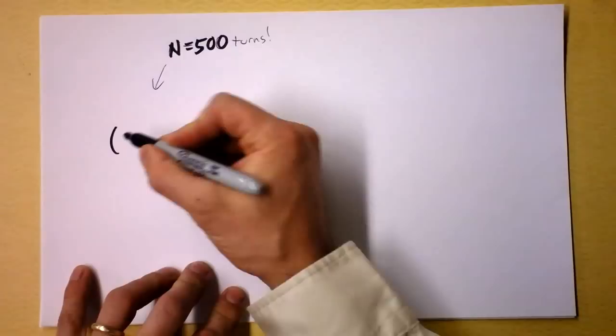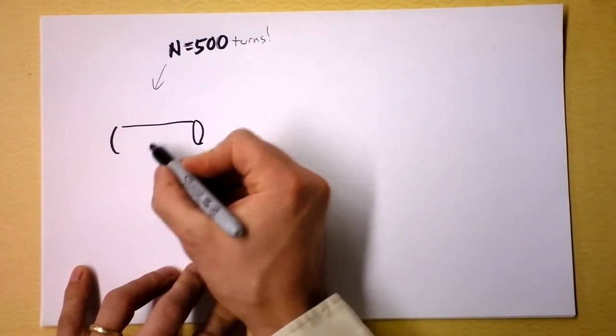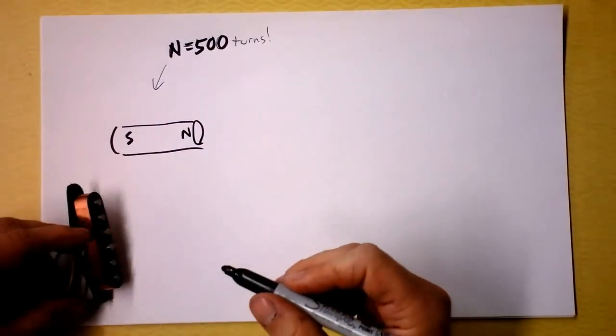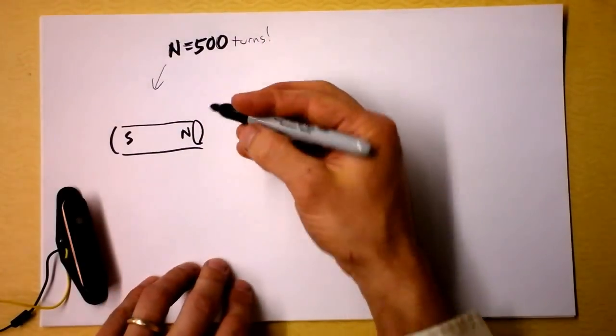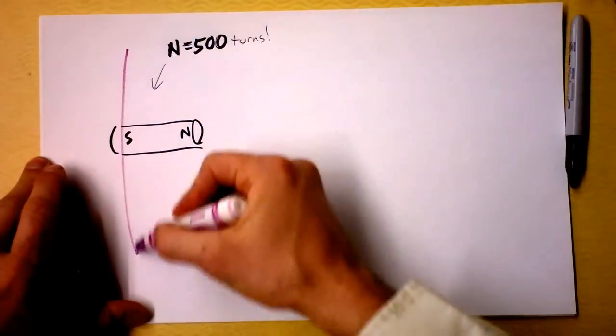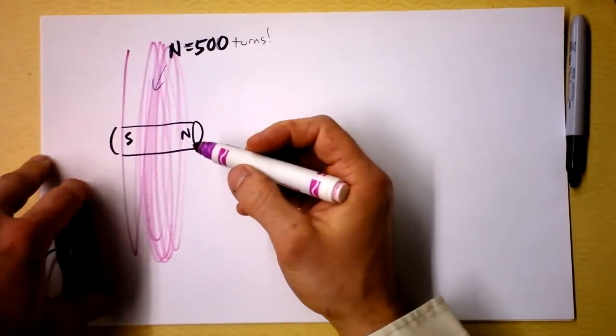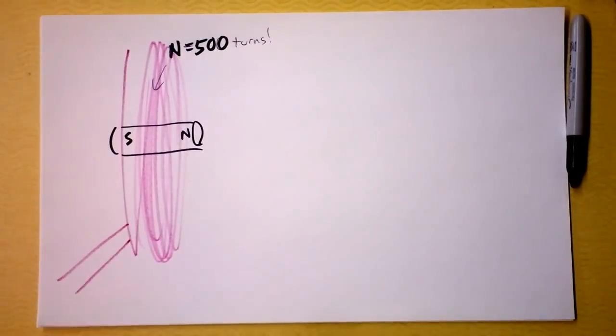So I'm gonna zoom in on just one of these magnets. The magnets like this and it has a north pole and a south pole. I don't actually know if the north pole is the one that's sticking up and I frankly don't really care. But there is a coil going around it like this. Lots and lots of turns. Hundreds of turns!